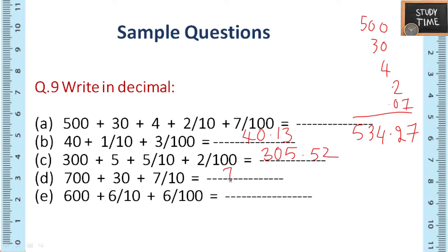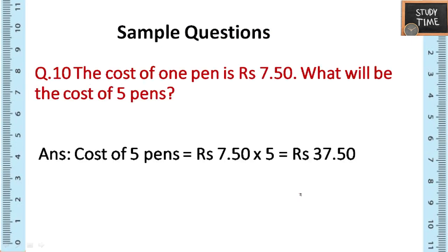For fourth one it is 730.7, that is 730.7. Next 600.66, so you can check the answers. Next question 10th question: the cost of one pen is rupees 7.50, what will be the cost of seven pens? Whenever you get this question, first write down the question. What is given: cost of one pen equal to rupees 7.50. Then write cost of seven pens is, you have to multiply it both, so the answer is rupees 37.50.